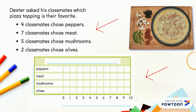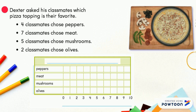Let's read the information. Dexter asked his classmates which pizza topping is their favorite. Four classmates chose peppers, seven classmates chose meat, five classmates chose mushrooms, two classmates chose olives.